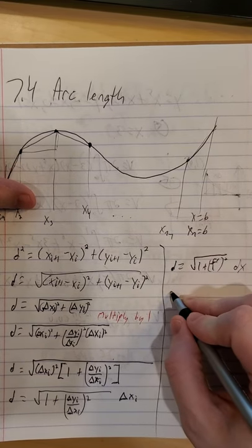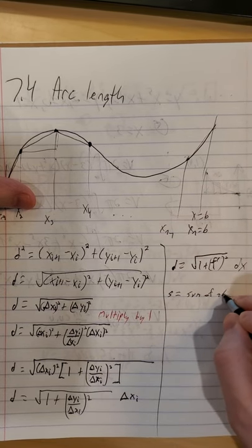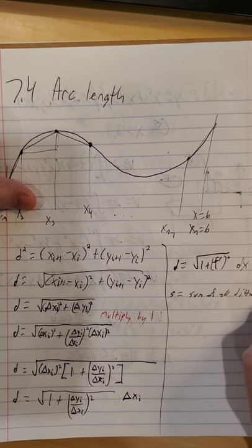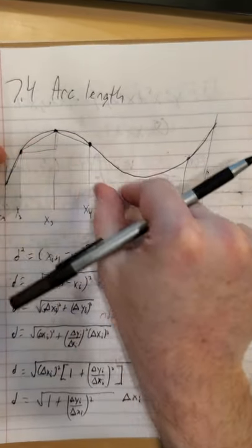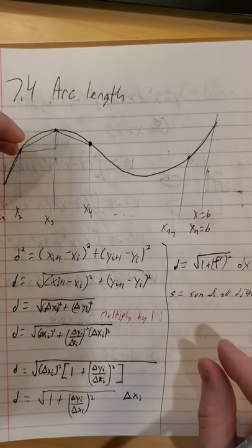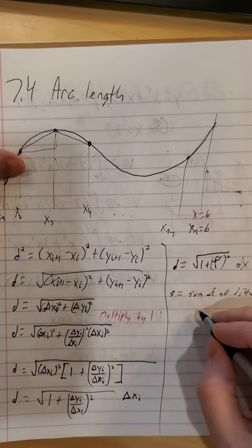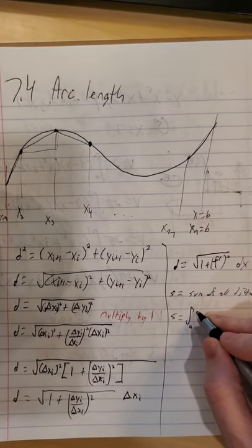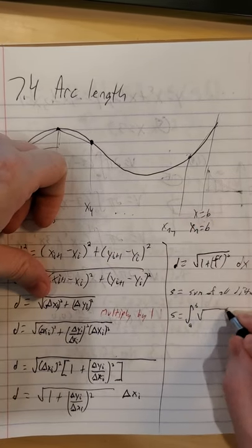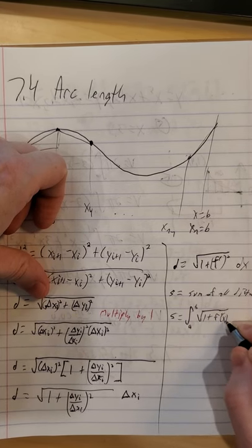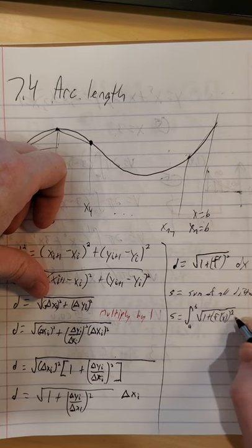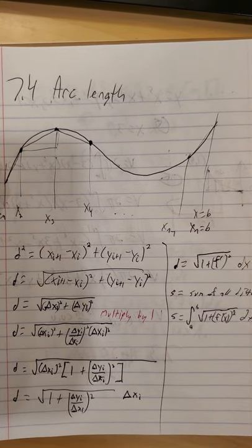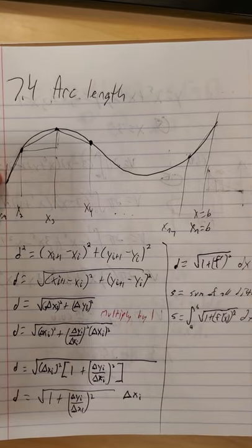So then if we let s be the sum of all distances, each one of these, and we let n approach infinity, draw more and more small line segments, then s will be integral from a to b square root of 1 plus f prime of x squared times dx. So this is our arc length formula if we know the function and we have a differentiable function.